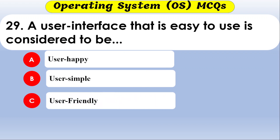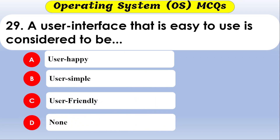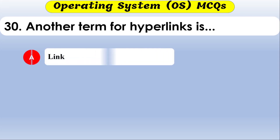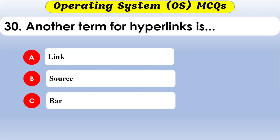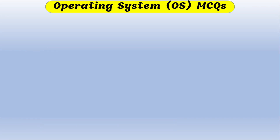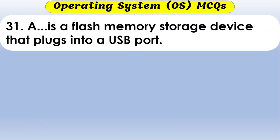A user interface that is easy to use is considered to be user-friendly. A term for hyperlinks — the options are link, source bar, and none of the above. The correct option is link.